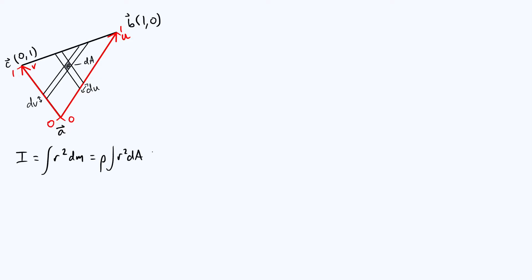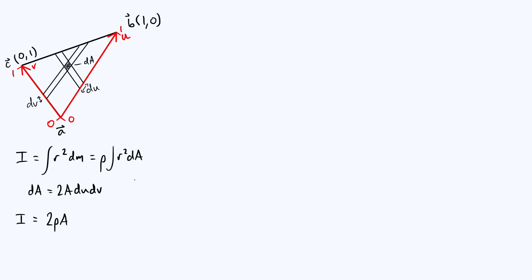Here's something I'm going to skip over a little bit in this video. In my previous video I explained why the area element dA is 2A du dv, where A is the area of the full triangle. It's basically because the area element dA is a little parallelogram which is a scaled-down version of a parallelogram that is twice as big as the triangle.